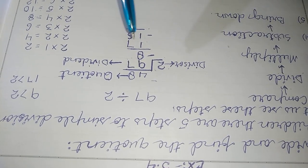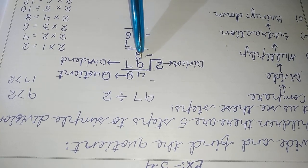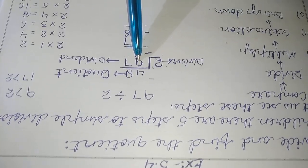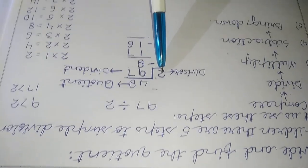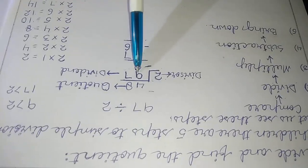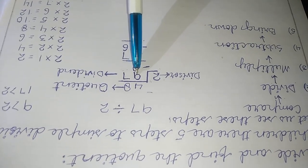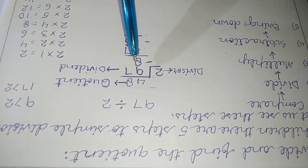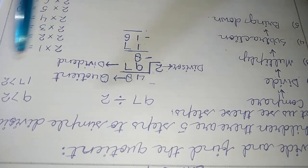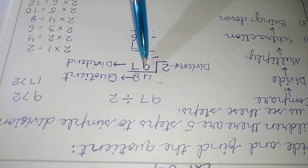First, we have to compare. We compare the leftmost digit of the dividend with the divisor. Here, the leftmost digit is in the tens place and that is 9. Since 9 is greater than 2, we can divide 9 by 2.